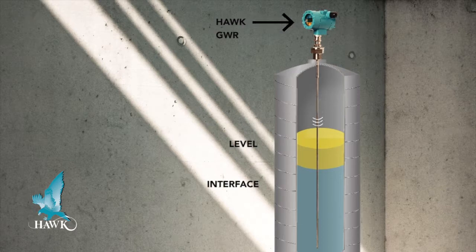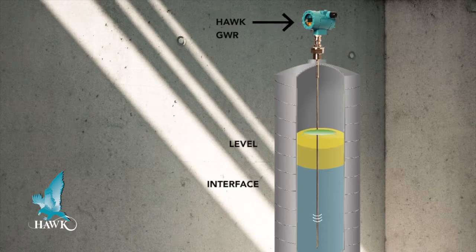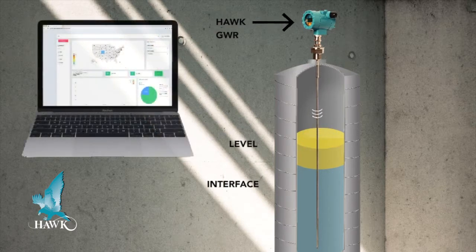The sensor precisely calculates the measurement using the time difference between impulses sent and received. The remaining pulses continue through media and reflect on the interface layer.